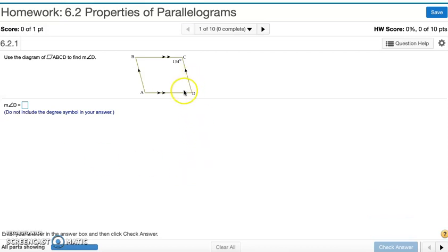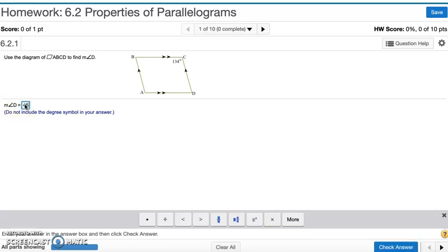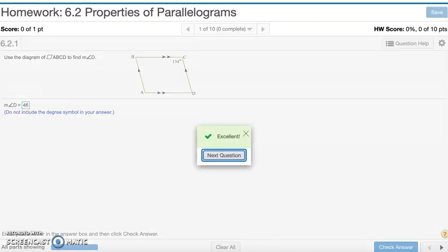Now the rule says consecutive angles add up to 180 degrees. So angle D and 134 add up to 180 degrees. So we've got to subtract 134 from 180 to find D. Doing so gives me 46. And that's number 1.